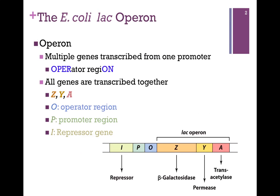The LAC operon functions in E. coli and other bacteria. The term operon refers to multiple genes that are transcribed from a single promoter and an operator region. All of the genes are transcribed together — in other words, they are all expressed, or none are expressed, or they're all expressed to the same level. This is a very common theme in prokaryotic systems.